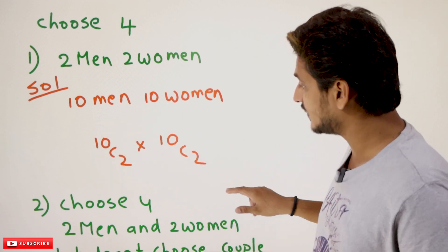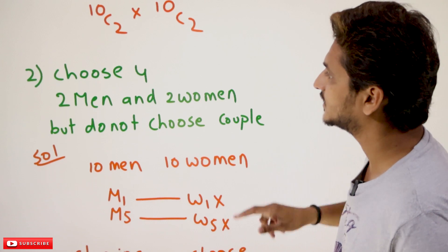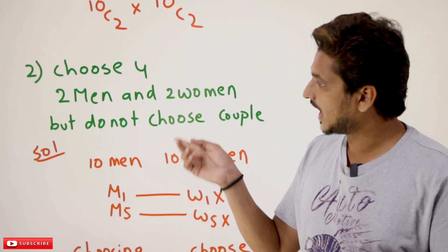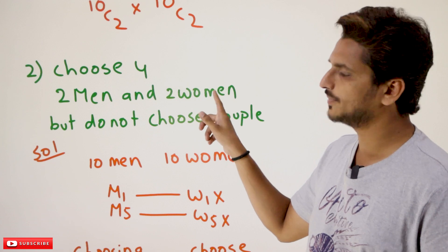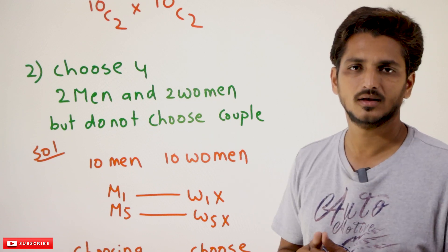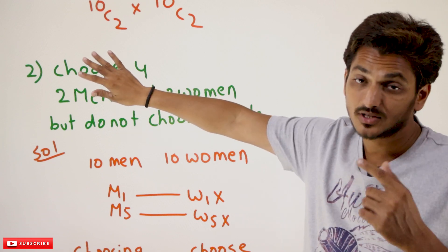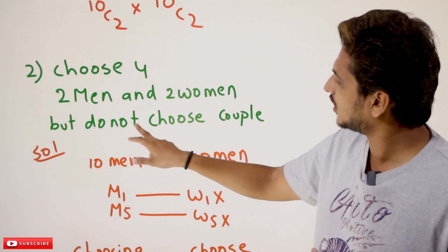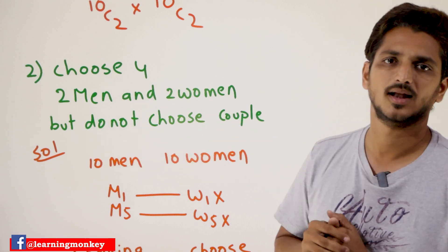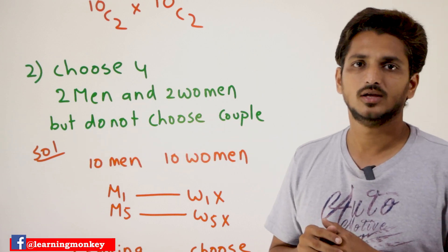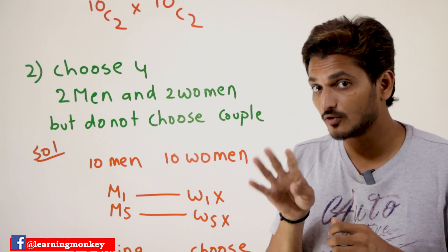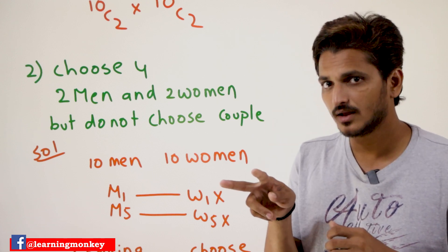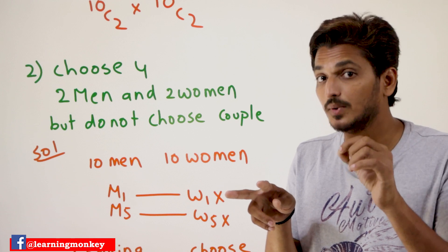Coming to the second one. The second one is a bit complex to understand. You need to choose 4 members, and it should include 2 men and 2 women — up to here it is the same. But there is one more condition here: do not choose a couple. If you select 4 members, in those 4 members you should have 2 men and 2 women, but you should not have a couple.